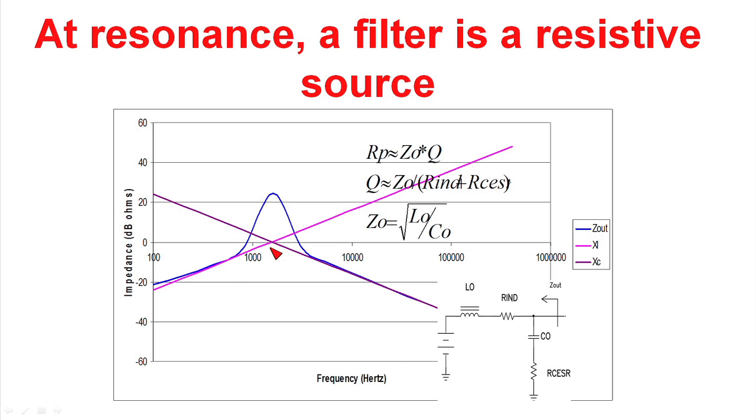And you see in the middle there that the impedance goes quite high. What happens is the capacitive reactance is equal to each other, but they have opposite signs. And when you do the math, you get a positive and negative that gives you a zero in the denominator and gives you a big peak. Now, this peak is set by how much damping is in the filter.